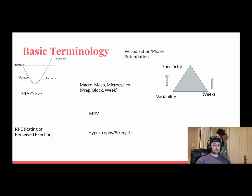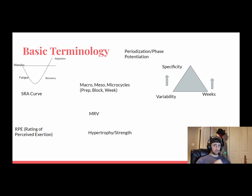So in week one of, say, a 16-week block, your training is very variable and not competition-specific. But as you get closer to that meet, you increase your specificity — ditching the accessory movements and honing in on bench, deadlift, and squat in competition style. You won't have as much variability; training becomes very specific to your sport.